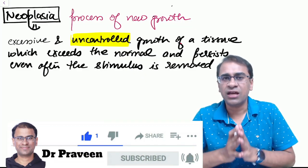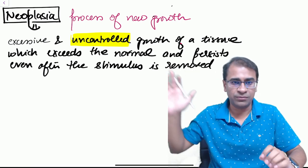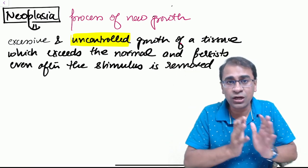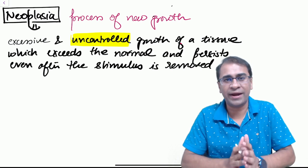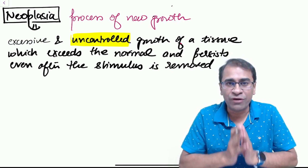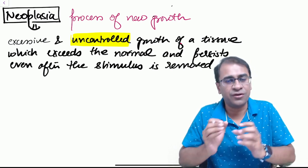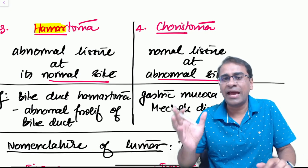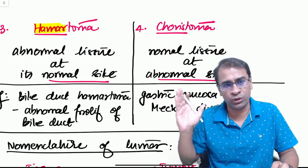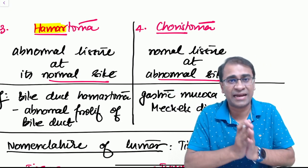Neoplasia is defined as an uncontrolled growth which is more than what is required and keeps on continuing even when the stimulus is removed. Neoplasia can be of two types: hematoma or choristoma. These are developmental anomalies, not exactly neoplastic.